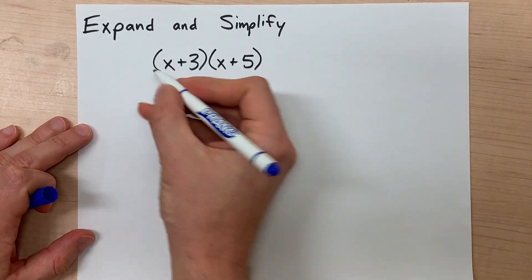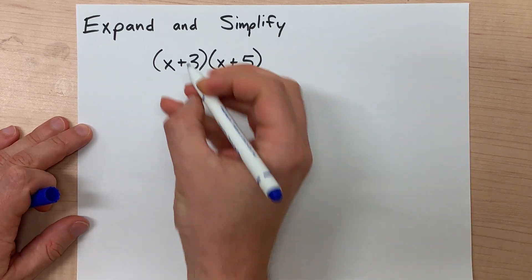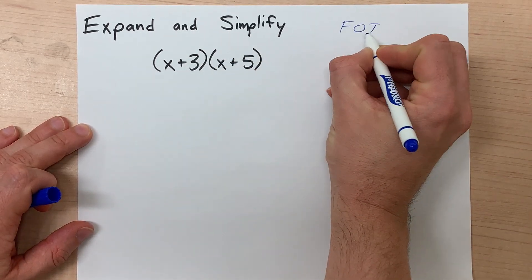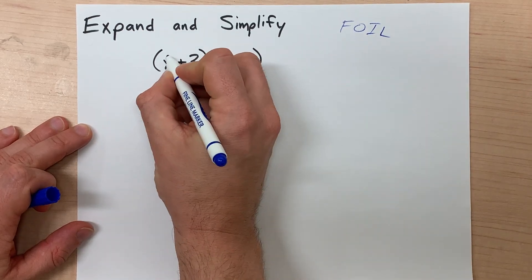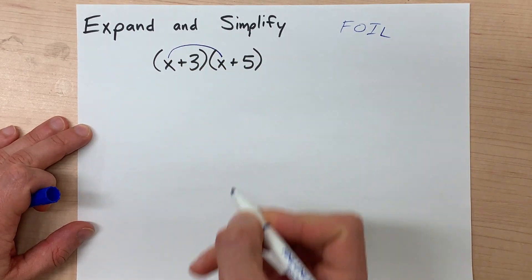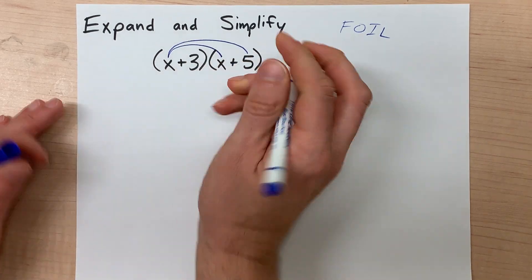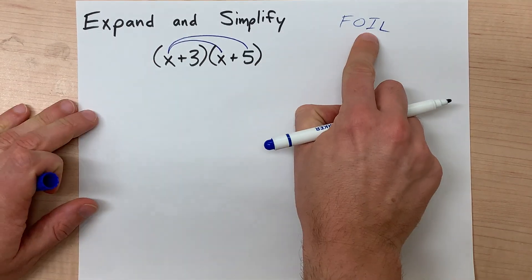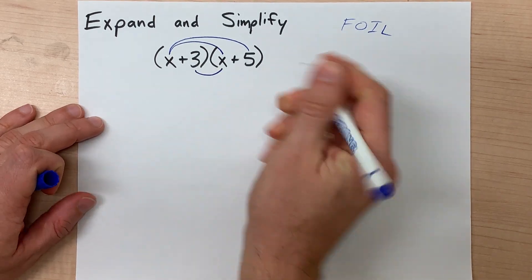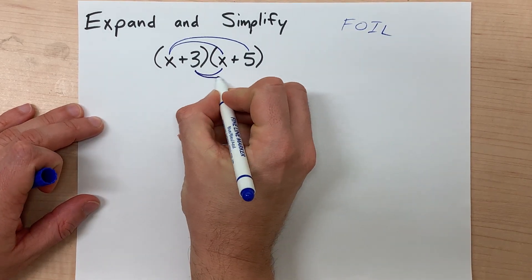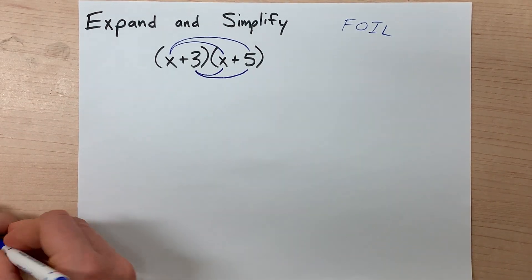And the way we can remember how to multiply what by what is to use something called FOIL, F-O-I-L, which means multiply the first two things in each bracket, then multiply the outside two things, then multiply the inside two things, then multiply the last two things inside the bracket.